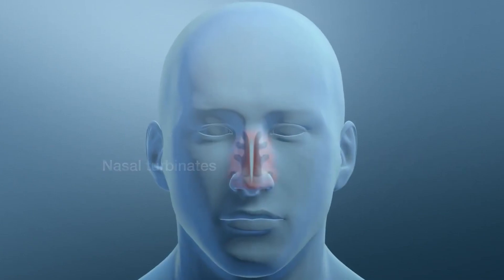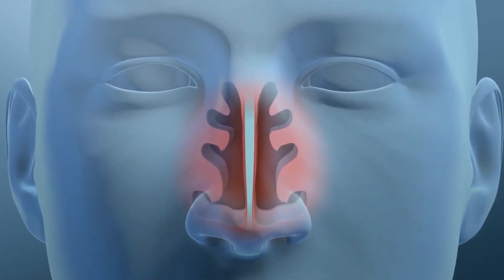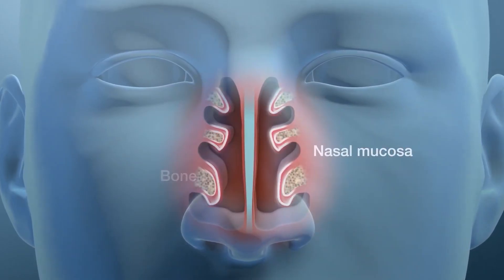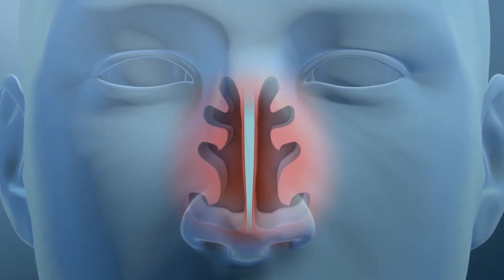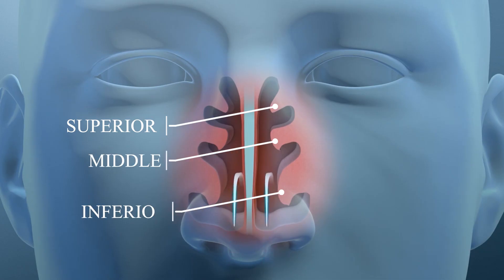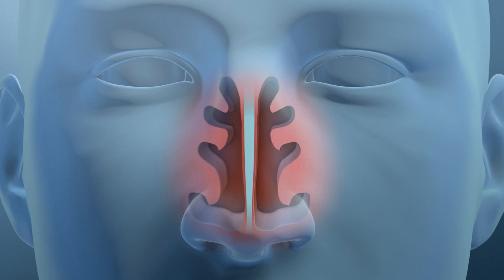Turbinates, or nasal conchae, are curved bones inside the nasal cavity covered in a thick layer of mucus membrane. They are responsible for increasing the surface area within the nose, which helps in conditioning the air we breathe. The superior turbinate is the smallest and sits highest in the nasal cavity, while the middle and inferior turbinates are larger and sit below. As air passes over the turbinates, it is cleaned by the mucus and warmed by the blood vessels within them, ensuring that air entering the lungs is at the right temperature and free of harmful particles.